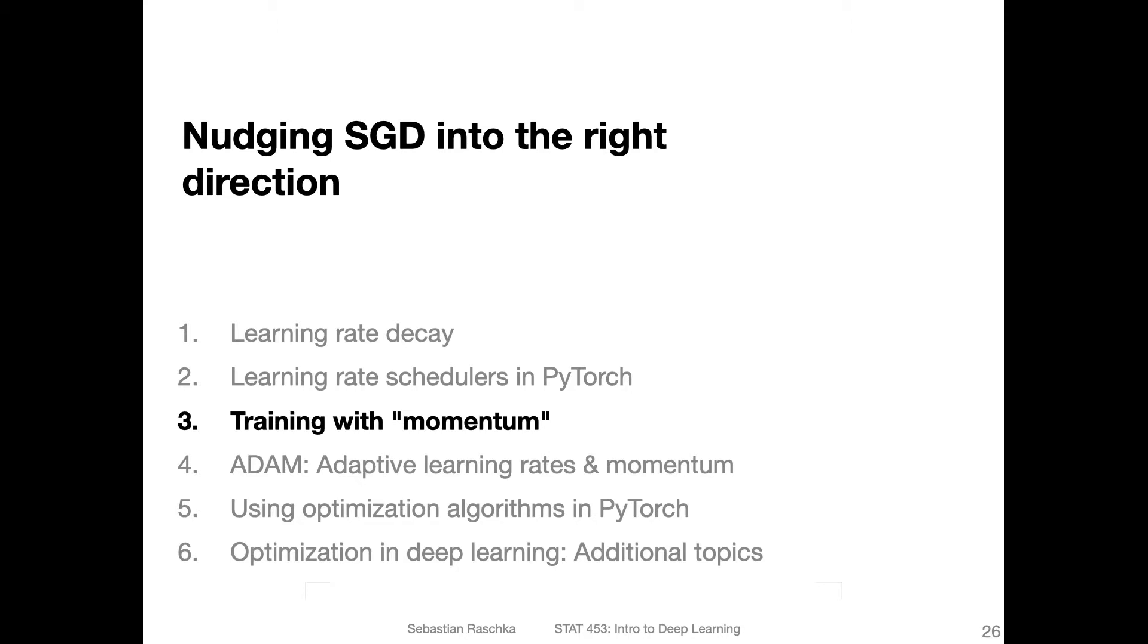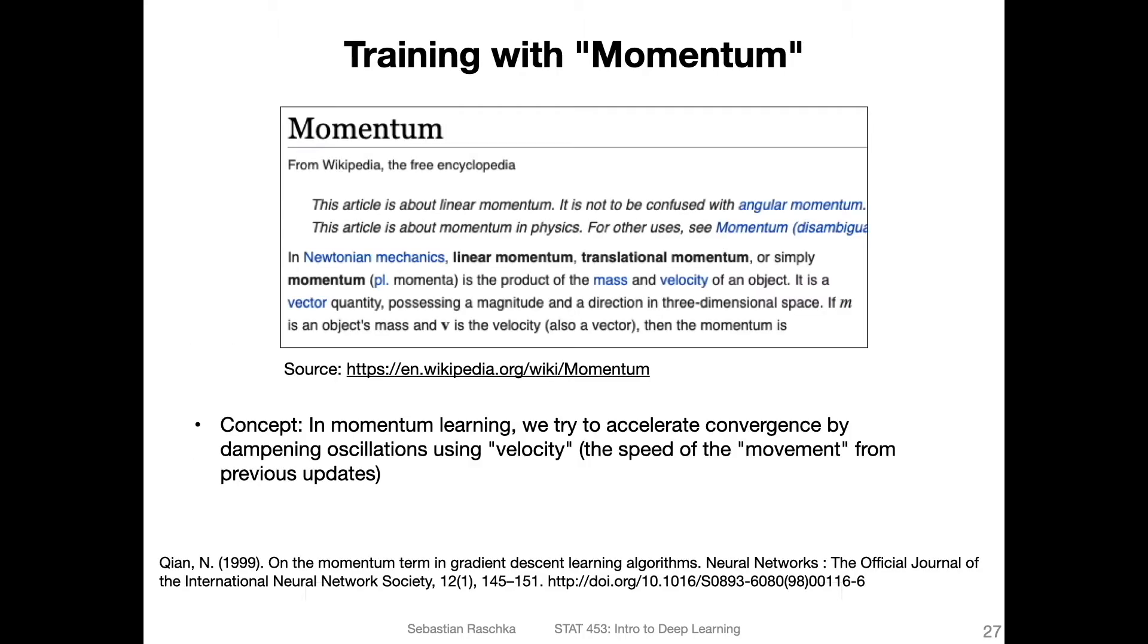All right, let's talk about momentum learning. Momentum is a term that we can add to SGD such that it takes into account the previous updates, stabilizing stochastic gradient descent and essentially making it less noisy.